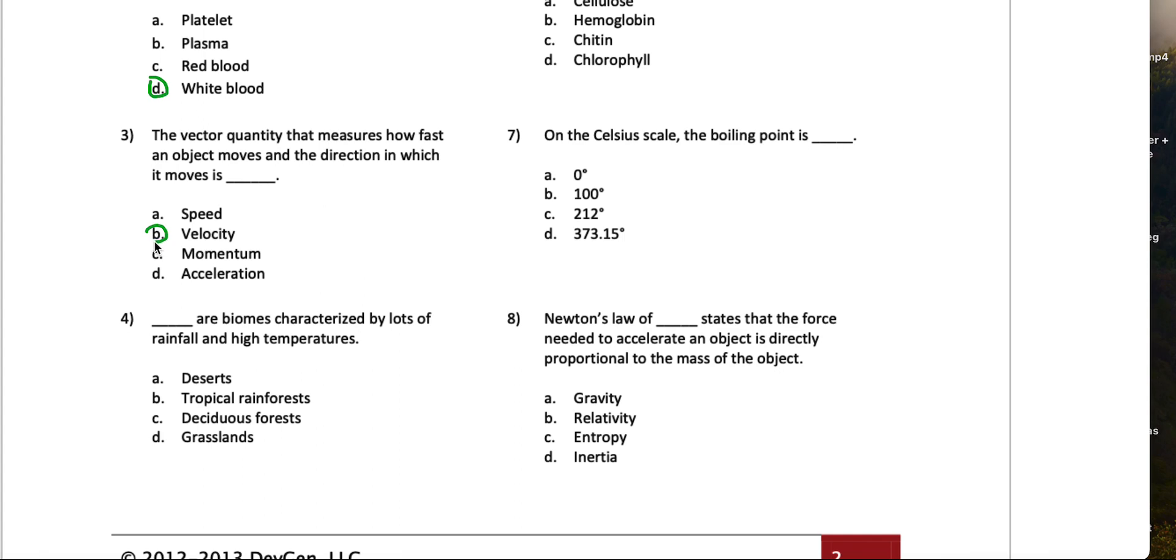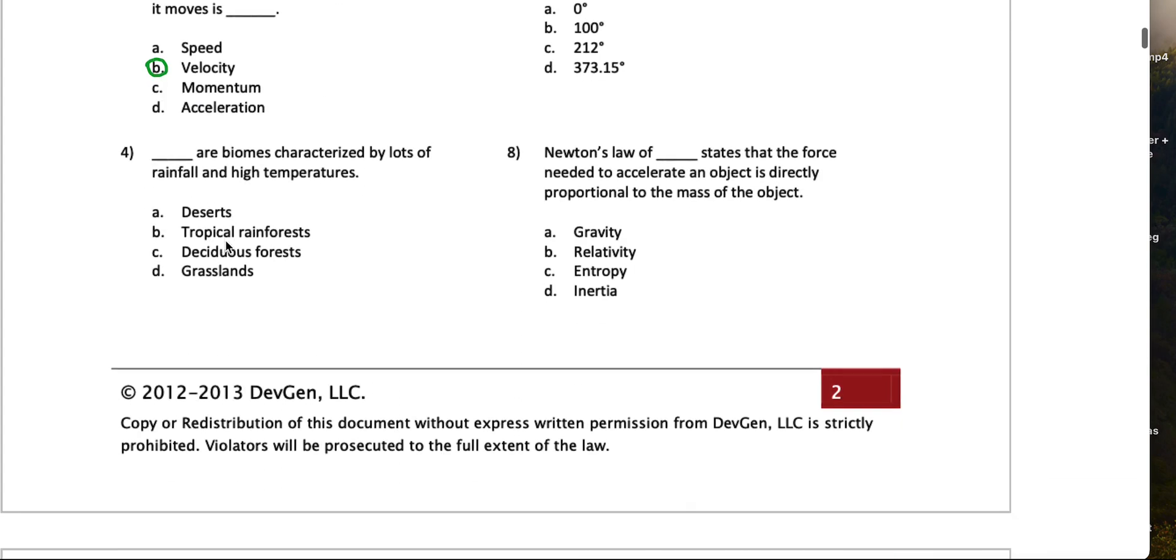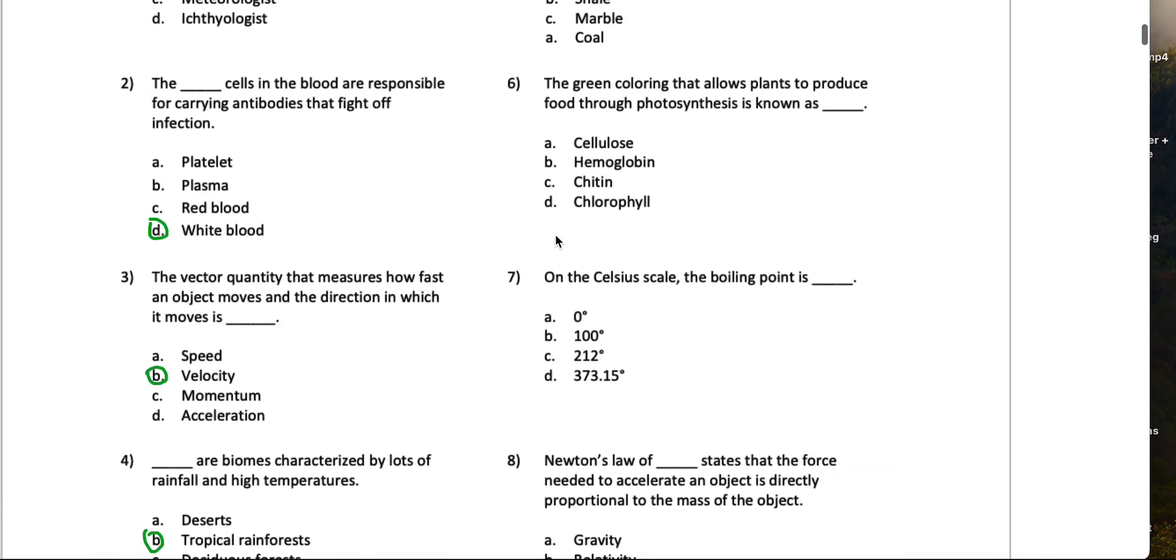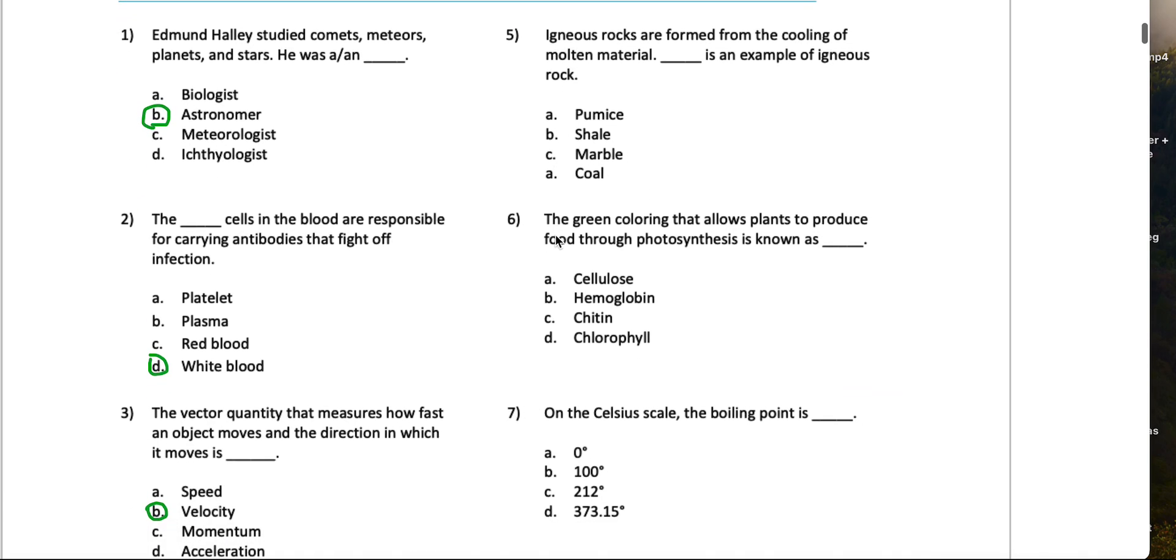Blanks are biomes characterized by lots of rainfall and high temperature. Well, we know the desert doesn't have lots of rainfall so it can't be that one. I would say that this is tropical rainforest because it's always raining in the rainforest, it has rain in it, right?